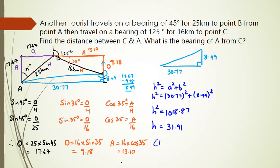So the distance between CA is 31.91 kilometers. As for the bearing, I need to work out what this angle is and add 180 to it, because remember, north is going to be here, and I've got 180 degrees coming from north to south.